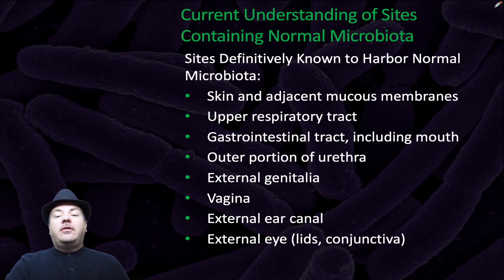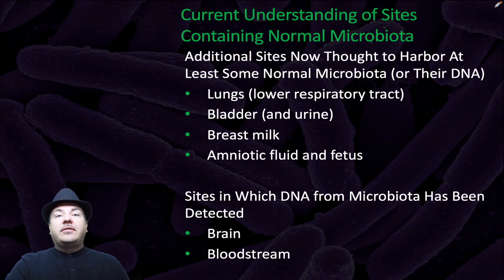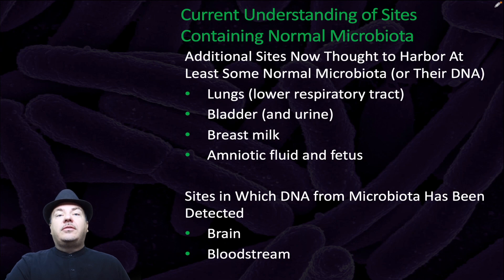Sites definitely known to harbor normal microbiota include skin and adjacent mucous membranes, upper respiratory tract, gastrointestinal tract including the mouth, outer portions of the urethra, external genitalia, vagina, external ear canal, and external eyelids. Additional sites now thought to harbor at least some normal microbiota or their DNA include lungs or the lower respiratory tract, bladder and urine, breast milk, and amniotic fluids and fetus. Sites in which DNA from microbiota has been detected include the brain and the blood stem.